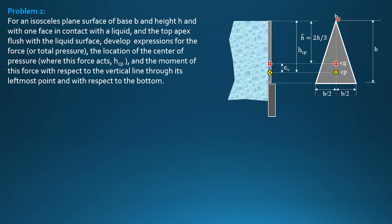So this is the figure. The apex is on top flush with the liquid surface. So the location of the centroid of area is two-thirds of h. This is an isosceles triangle. And the center of pressure is below. And the distance this time, I call it ev because the plane surface is vertical. The height is h. So the centroid of area and the center of pressure coincides with this axis of symmetry.